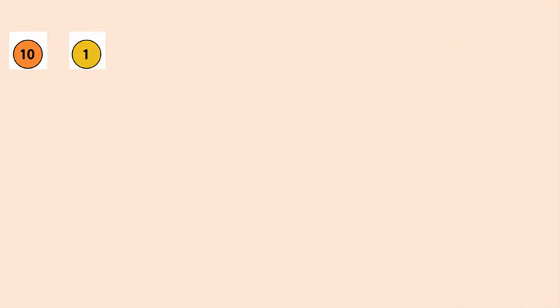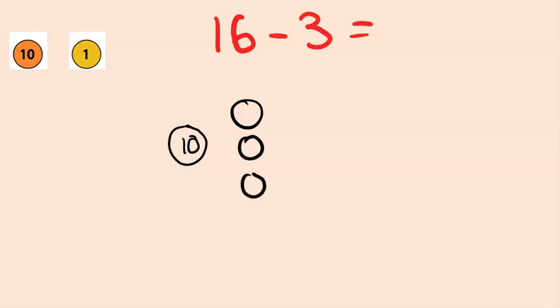Similarly to this, we have place value counters, so if we did 16 take away 3, they could say that 16 is a 10, and then 1, 2, 3, 4, 5, 6 of our 1s.